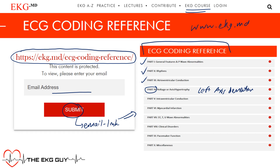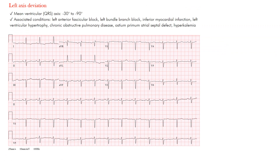Let's get started with left axis deviation. How do we determine axis? This is something that is often difficult early on when learning, so let's see if we can simplify it. There are multiple ways to determine axis. When we talk about axis, we're talking about ventricular axis — you may also see it on the EKG as the R wave axis.